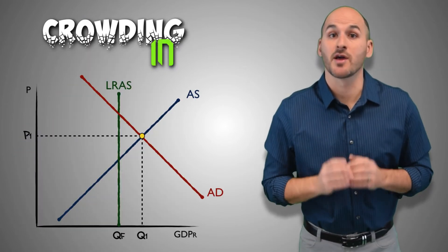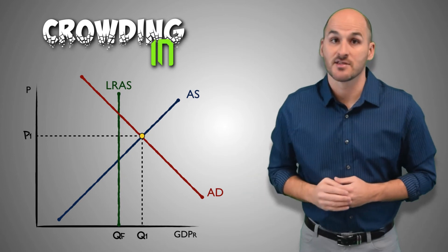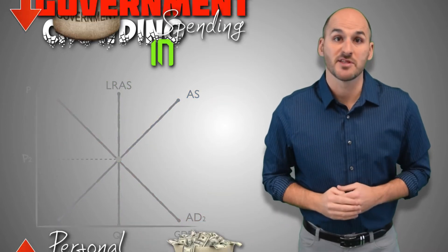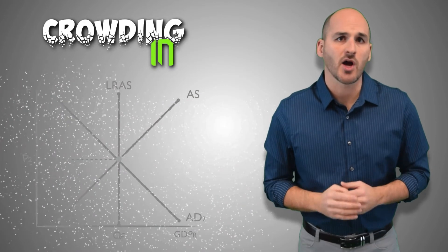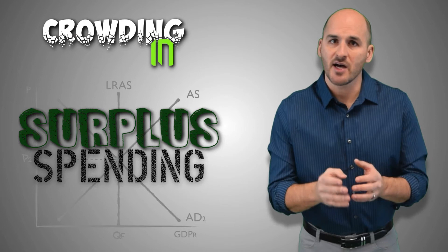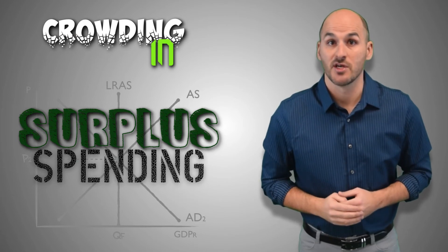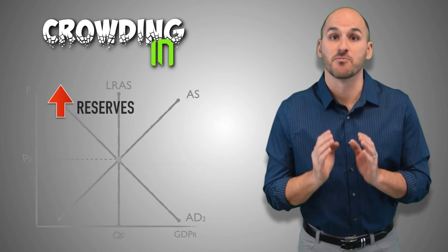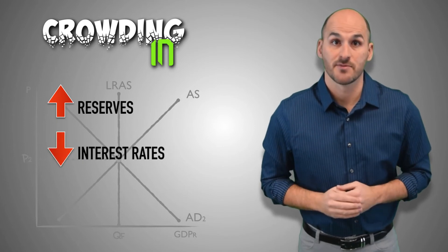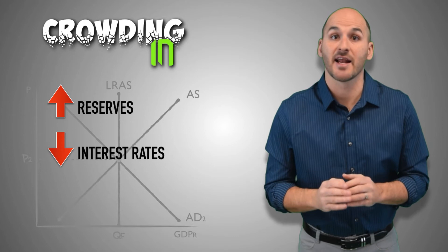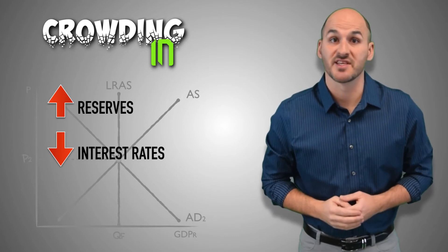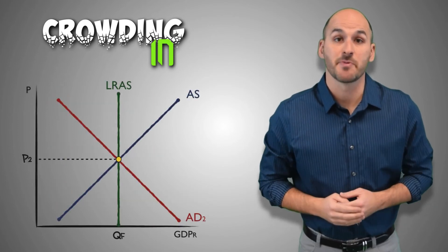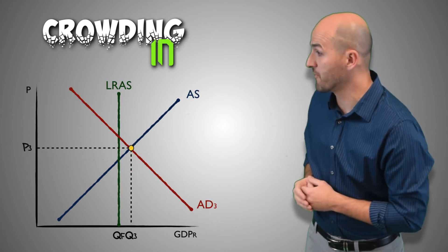Crowding in is associated with government surplus spending. When an inflationary gap exists, government can use contractionary fiscal policy to close the gap. However, decreasing government spending, increasing personal taxes, or using a combination of both can lead to surplus spending. Because the government has more revenue than it needs to fund its expenditures, it no longer needs to borrow money. This reduces the demand for loans throughout the banking system and leaves banks with more reserves, which drives down interest rates — meaning loans are less expensive for firms and consumers. Ultimately, firms will increase the quantity of loans they take out and boost their investment spending to take advantage of the lower interest rates, causing investment spending to increase and reducing the effectiveness of the initial contractionary fiscal policy.